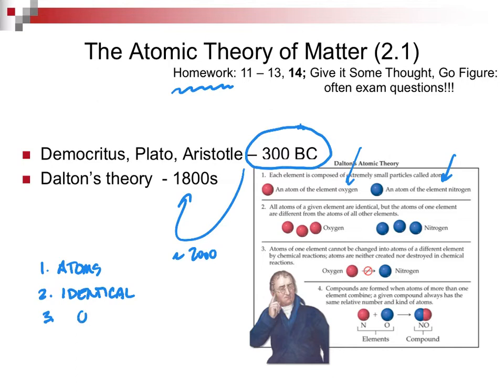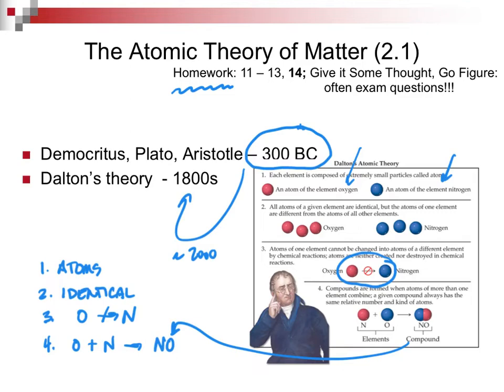The third part of Dalton's theory is you cannot change one element into another — that is nuclear chemistry, covered in Chemistry 1220. And finally, atoms combine: take oxygen and nitrogen atoms and you make something like NO, which we call a compound.